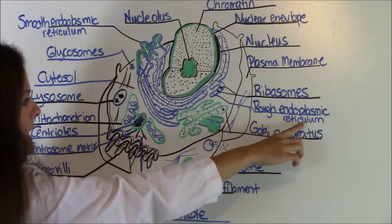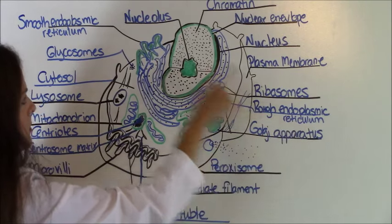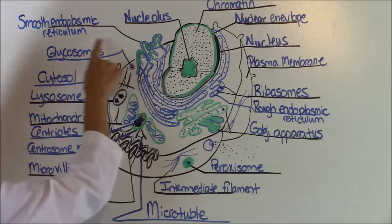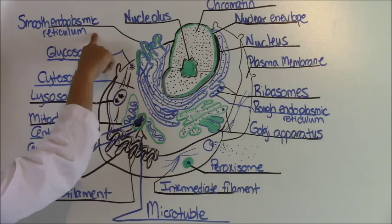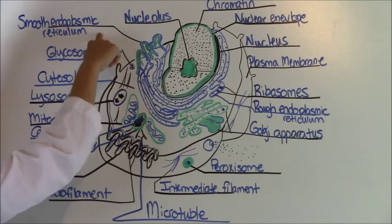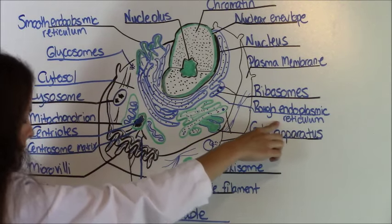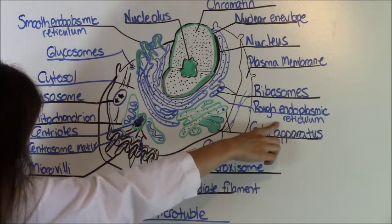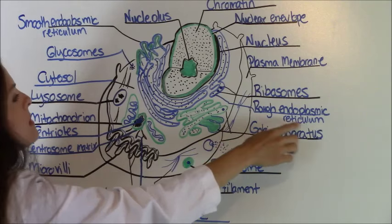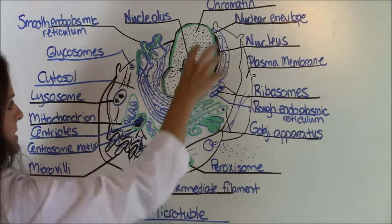Next, you have the rough endoplasmic reticulum. Remember, we went over the smooth endoplasmic reticulum. And remember, the smooth endoplasmic reticulum was responsible for metabolizing lipids, which are fats. But your rough endoplasmic reticulum is responsible for the cell's membrane. So this helps make the cell's membrane.